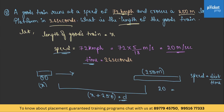Speed is 20 m/s, distance is x + 250, and time is 26 seconds. So 20 × 26 = 520 = x + 250. Therefore x = 520 − 250 = 270 meters — that is the length of the goods train.